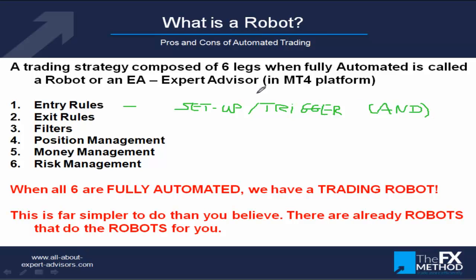Exit rules: the minimum a trading system should always have is a stop loss. If you don't have a stop loss, for us it's not a trading system. You could argue there are systems without stop losses — it's true, but they will lose their accounts sooner or later. So for me, by definition, that's not a trading system. That's the most basic exit rule, but there are others: you could have a take profit, which is in the positive realm.